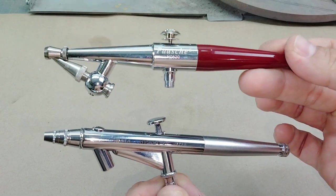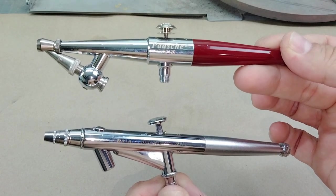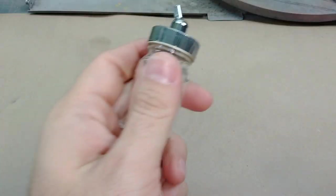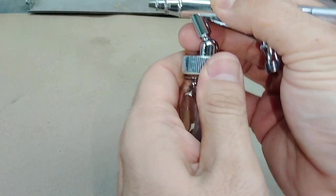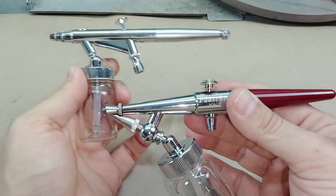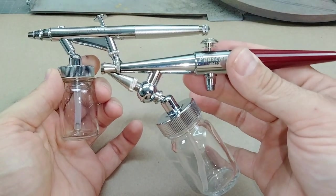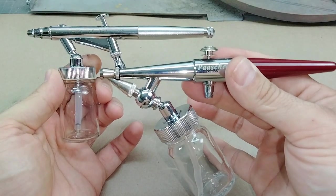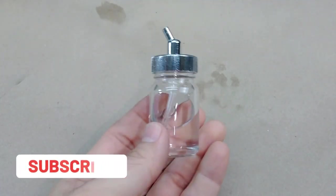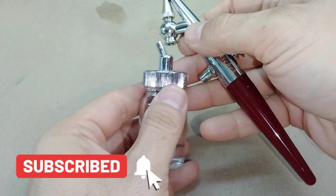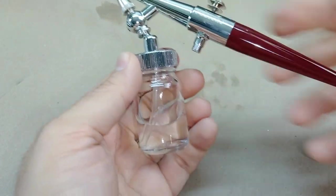Now there are advantages to this and the previous type of siphon feed airbrush. The most obvious being that you can put larger bottles onto these airbrushes to be able to move more paint if you have a larger project that you need to paint. One small factor about using a bottle with one of these siphon airbrushes—it's not a big deal, but it is something to be concerned about—is depending on the angle that you're spraying at.